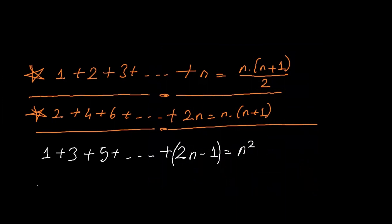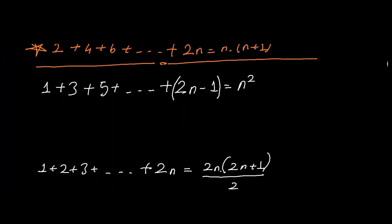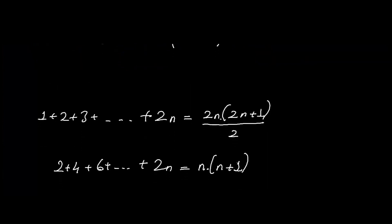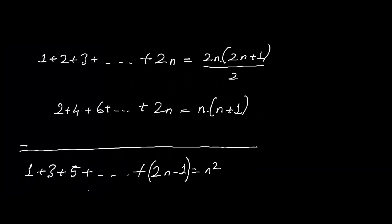Let's continue with the third formula of the video — please keep in mind the first and second formulas. We want to explain why the sum of consecutive positive odd integers from 1 to (2n minus 1) equals n squared. From the first formula we know the sum of consecutive positive integers from 1 to 2n equals 2n times (n plus 1) over 2. On the other hand, we know the sum of consecutive positive even integers from 2 to 2n equals n times (n plus 1). The difference of these two arithmetic sequences gives us the left side equals the sum of consecutive positive odd integers from 1 to (2n minus 1), and the right side equals n squared.